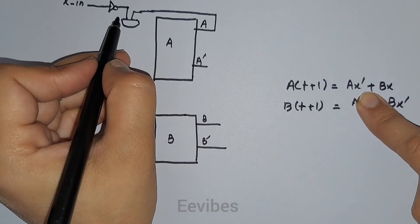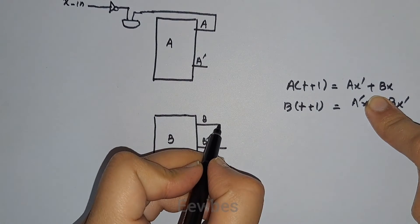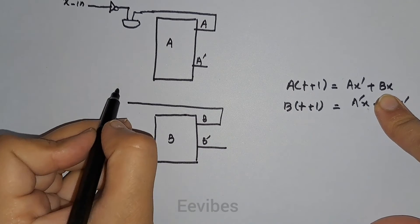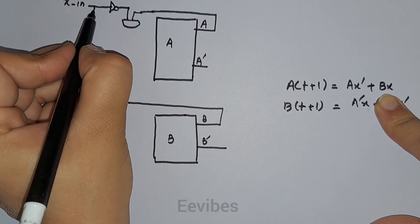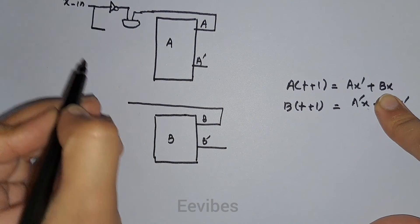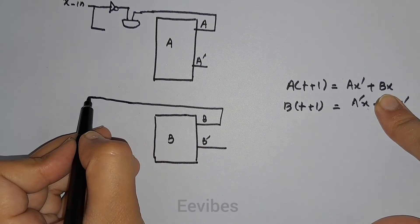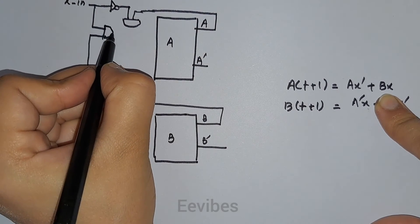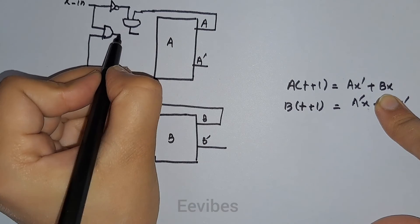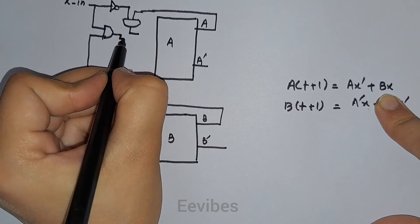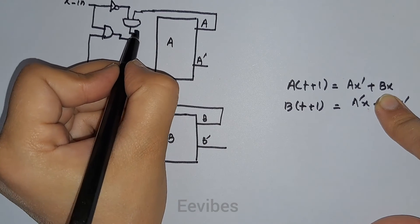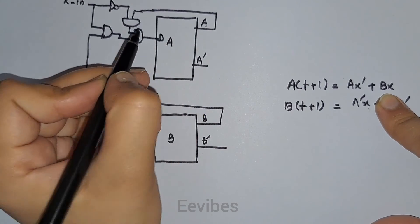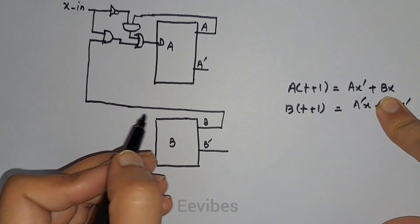To implement A(t+1) = Ax' + Bx, we AND signal A with x-complement, then AND signal B with x. We OR these two AND gate outputs together to provide the D input of flip-flop A.